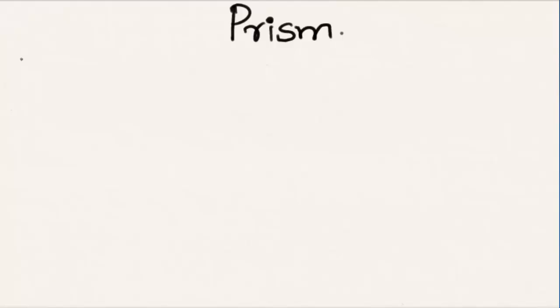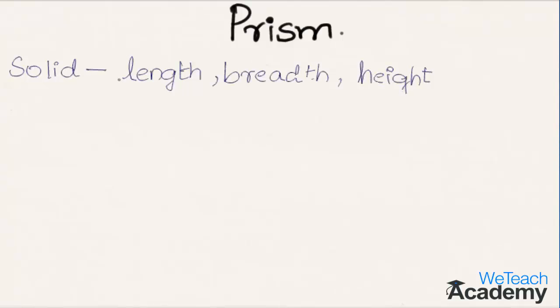First let me define a solid. A solid is an object which consists of length, breadth, and height. Such an object is called a solid.